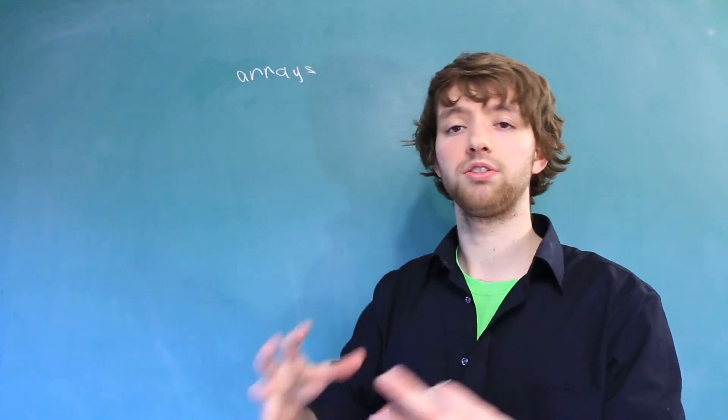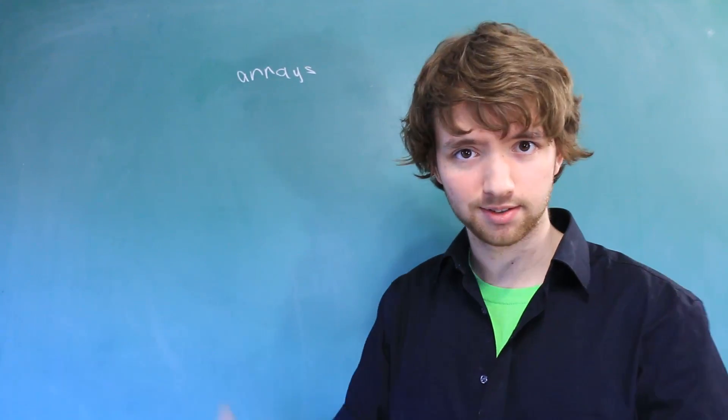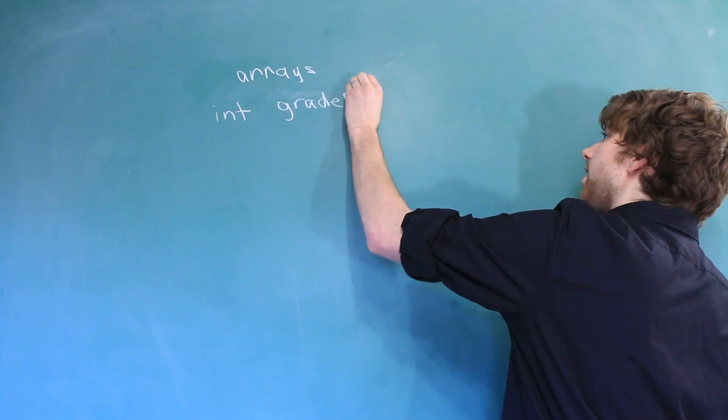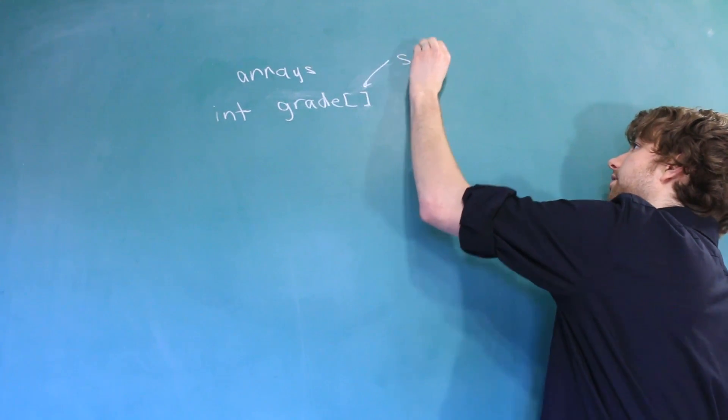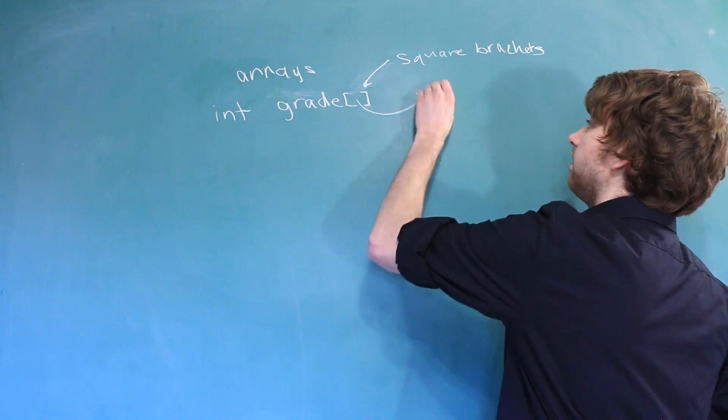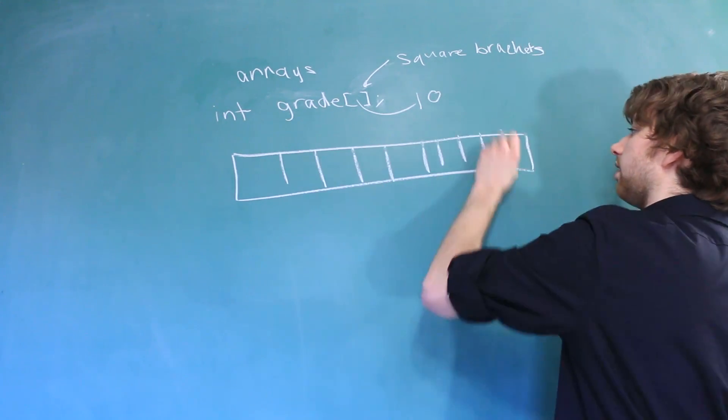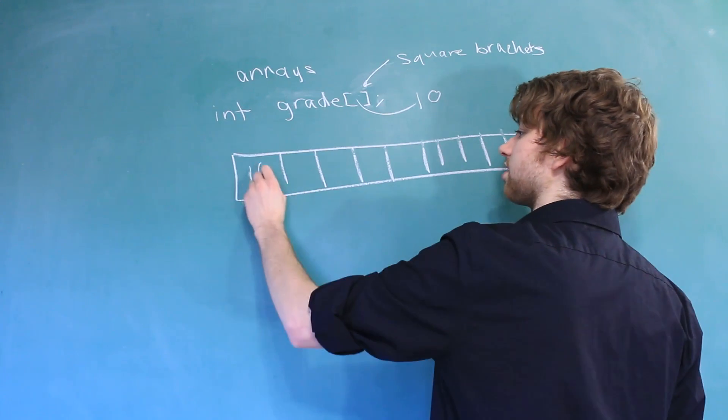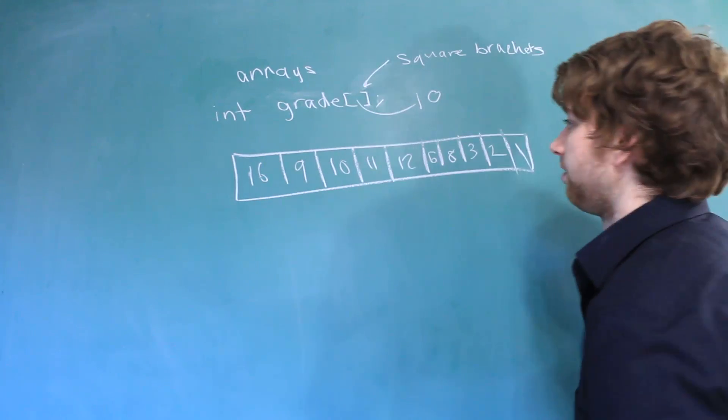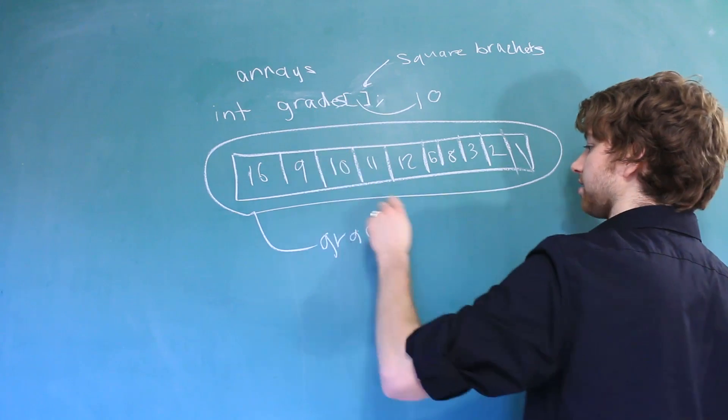An array allows you to store more than one thing inside of a group of whatever this thing is. So for example, we could have an int array. You can name it whatever you want. And an array is signified with these square brackets and inside of here we put some number. So we could put like 10. And essentially what this is going to do is give us a group of things. I kind of ran out of space there. But each one of these can hold an individual value. This entire thing is grades and it might make more sense if we put an S on it.